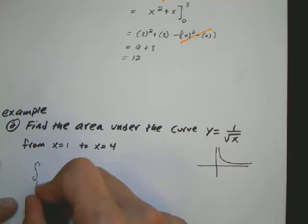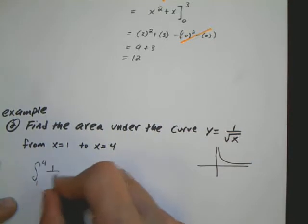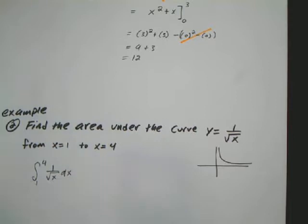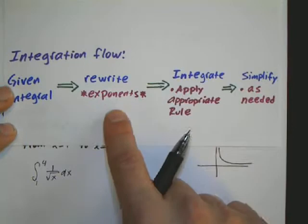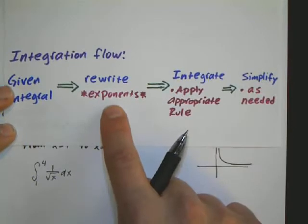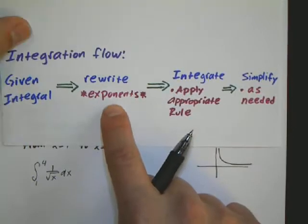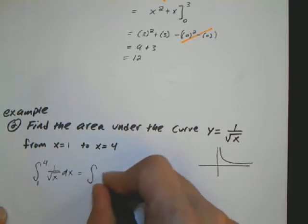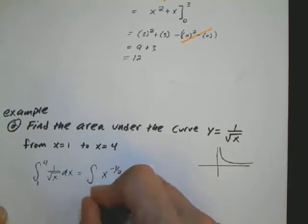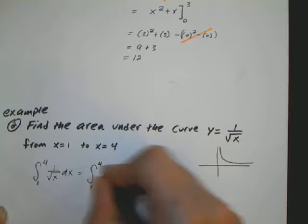So I have to use an integral to find this value. So I'm going to set up the integral from 1 to 4 of 1 over square root of x dx. Now I still have to kind of use the integration flow as far as I have to now rewrite this. I'm using exponent property. 1 over square root of x is the same thing as x to the negative 1/2. Keep my limit from here to here.